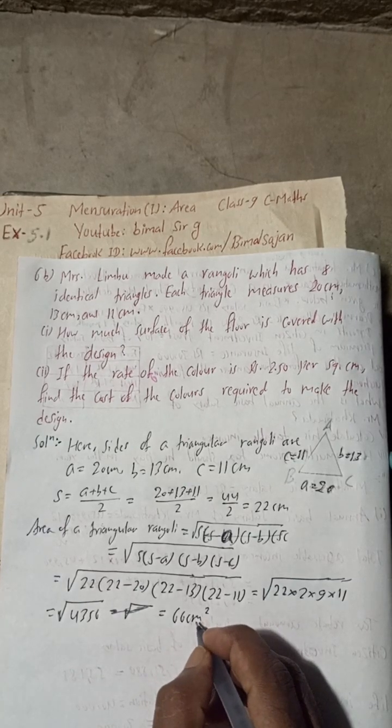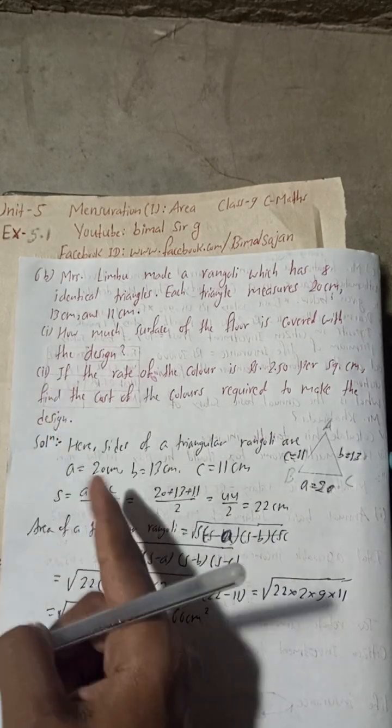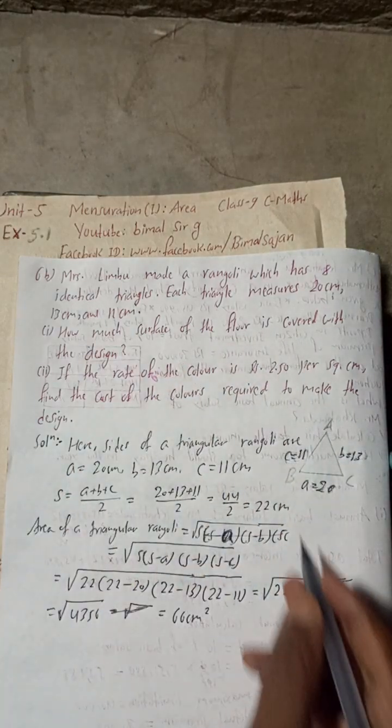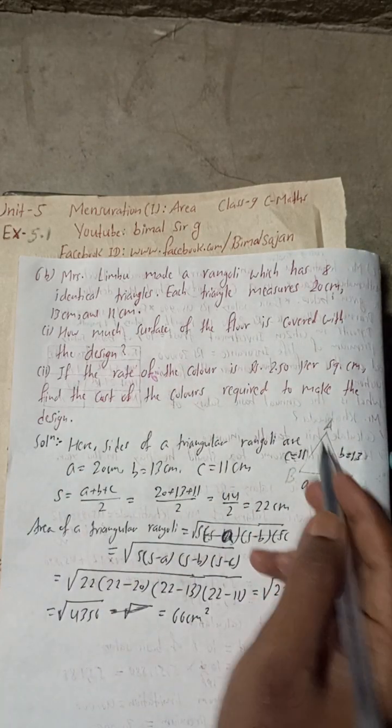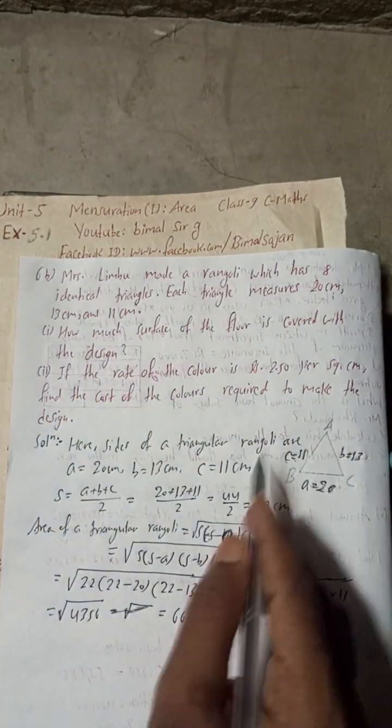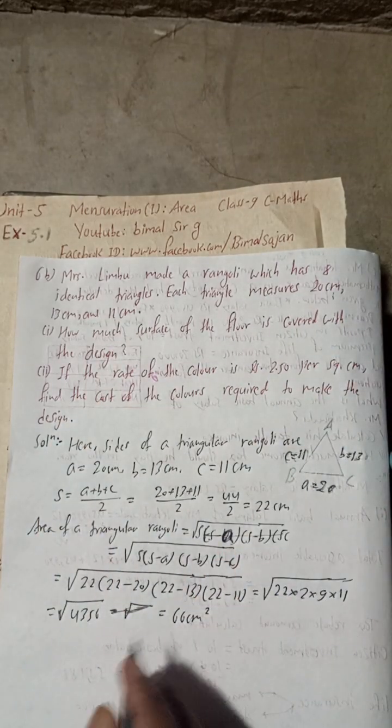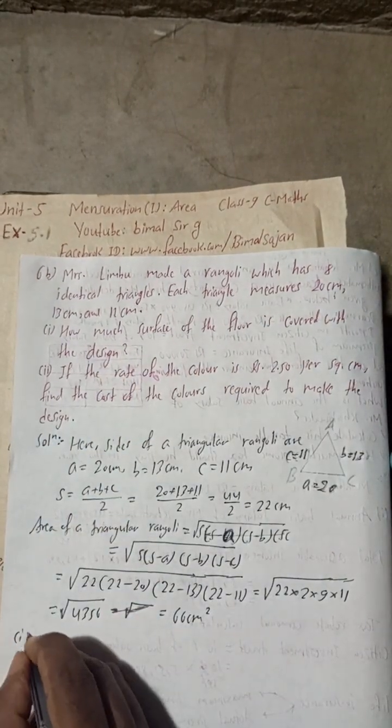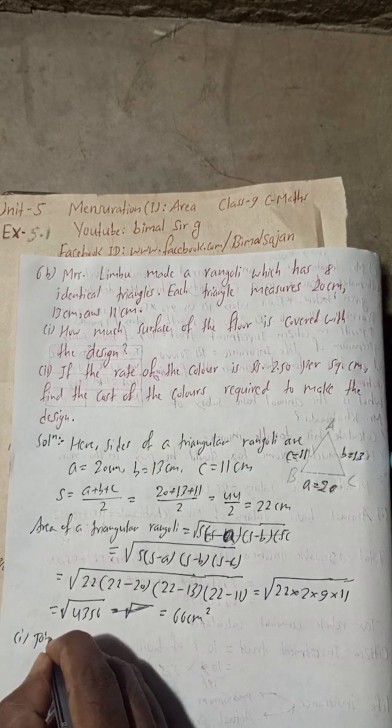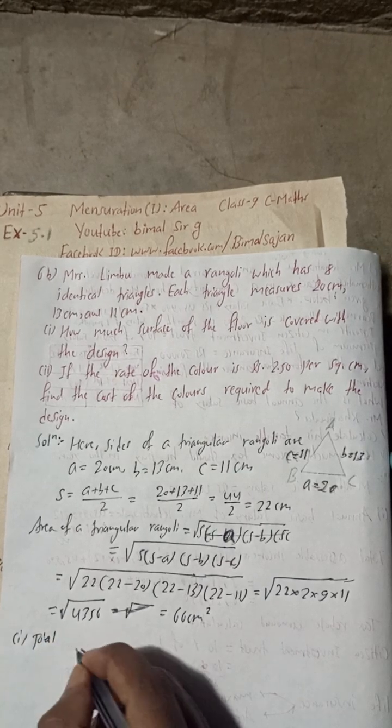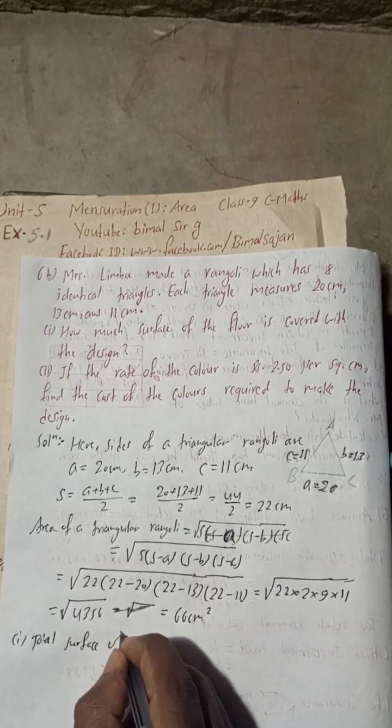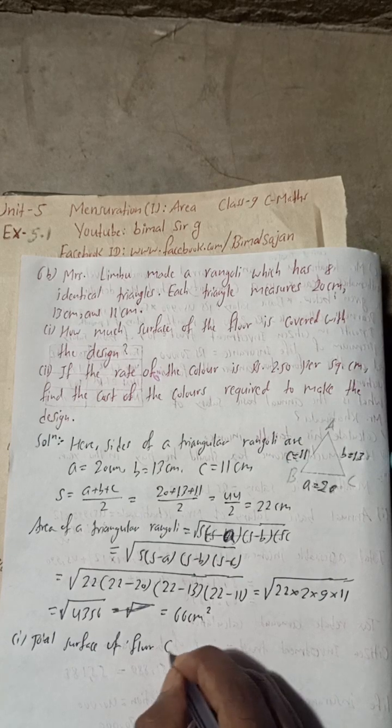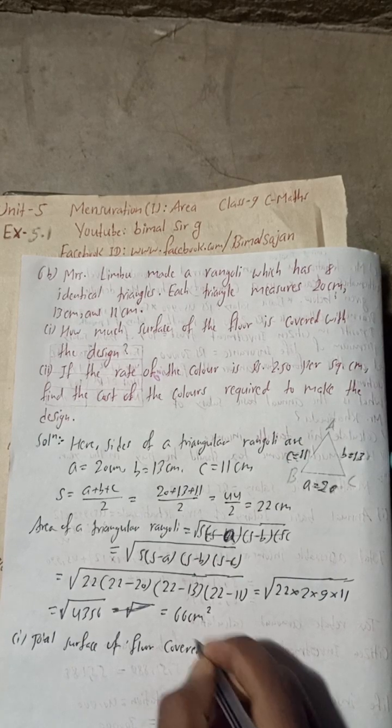Now we can easily find how much surface of the floor is covered with the design. With the design means there are eight identical triangles, the same triangles, so eight designs.